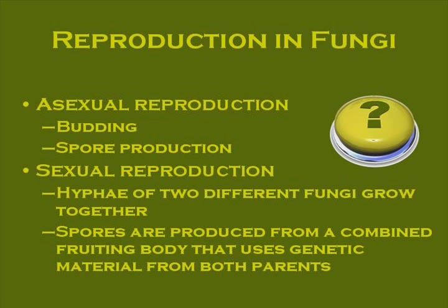In sexual reproduction, two fungi growing relatively close together — say two different mushrooms near each other — will have their underground hyphae grow together and touch one another. They then produce spores in a combined fruiting body. So the hyphae grow together, produce one fruiting body, and make spores that have genetic material from both parents. There's an animation online to help understand this process, but it qualifies as sexual reproduction because the genetics come from both parents.